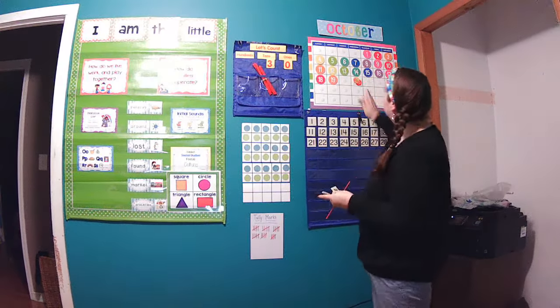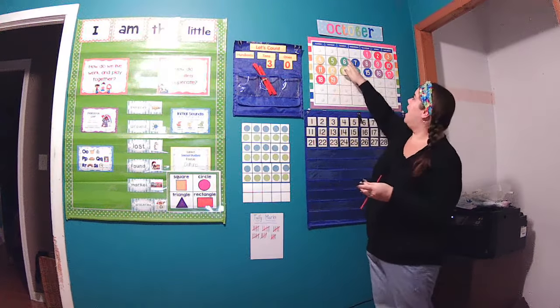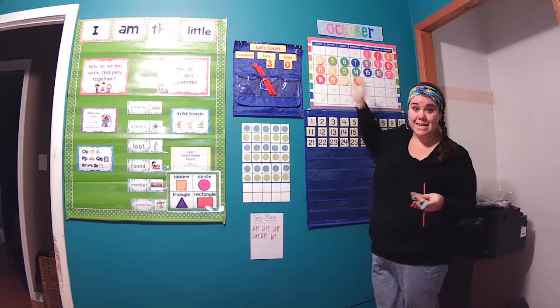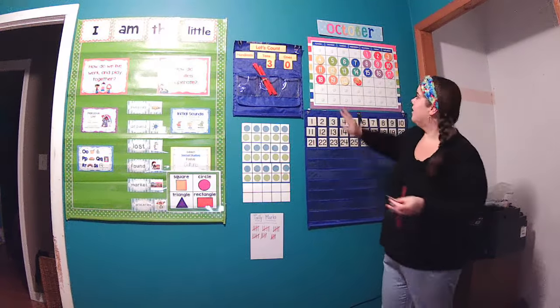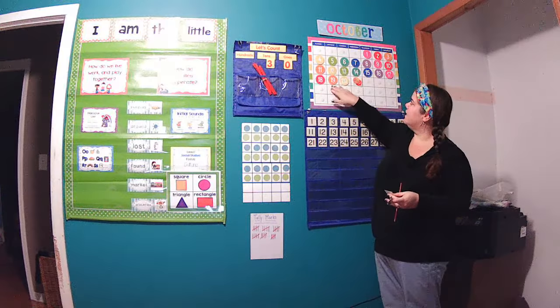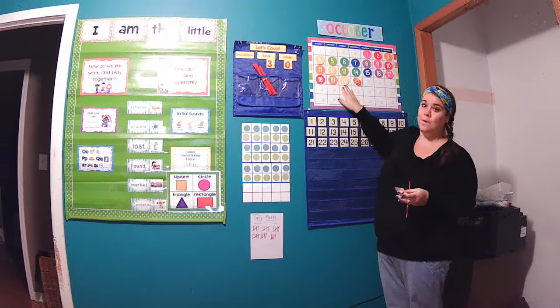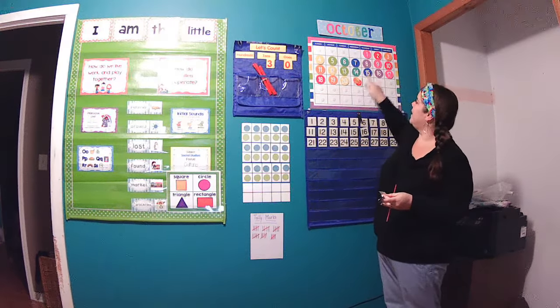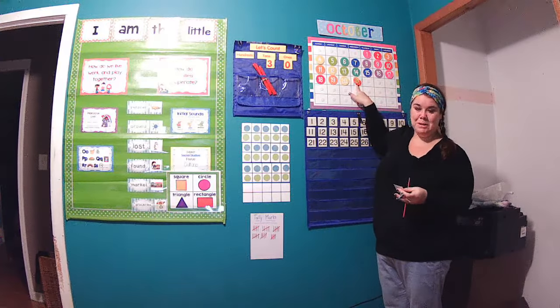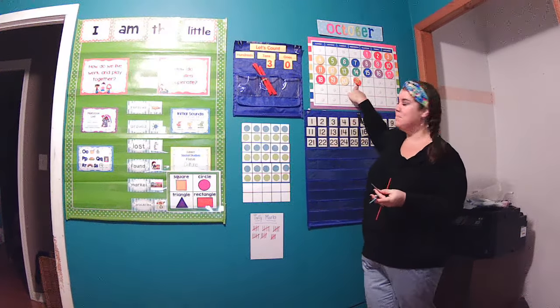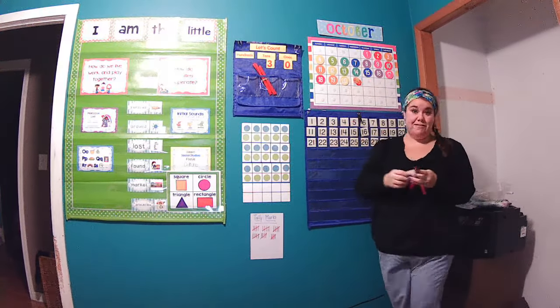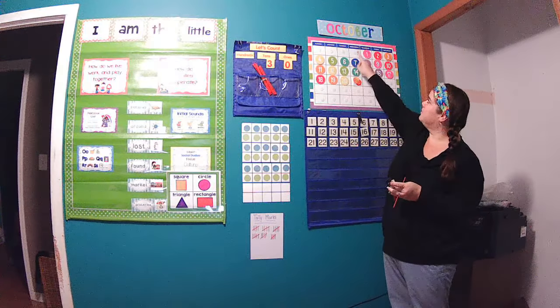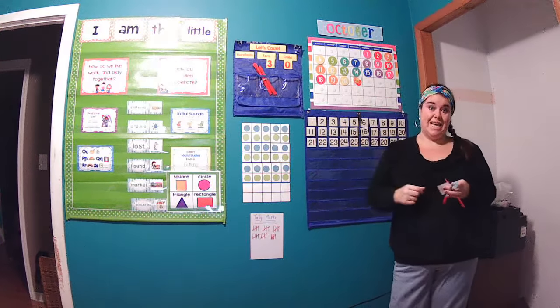Today is Tuesday, October 19th, or excuse me, 20th. A two and a zero. So yesterday was Monday the 19th, today is Tuesday the 20th, tomorrow is Wednesday, and it's an extra special day. We've got a birthday tomorrow, so we'll be looking for that tomorrow.